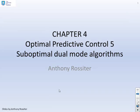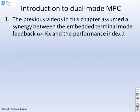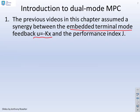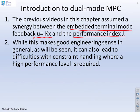This video looks at suboptimal dual-mode algorithms. The previous videos in this chapter assumed that there was a synergy between the embedded terminal mode feedback, u equals minus kx, and the performance index j. This does make good engineering sense in general. However, it can lead to some difficulties when you start considering constraint handling, especially where a high performance level is required.